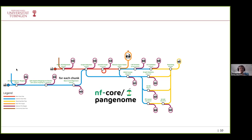One major bottleneck with a huge amount of input sequences is the all-versus-all alignment because it is quadratic. What's possible now is to first do an all-versus-all approximate mapping, then split results into chunks — for example 20 — and for each chunk run the heavy base-level alignment in parallel across nodes of the cluster. This leads to a much shorter runtime for this step, and all the following steps then proceed as already presented.